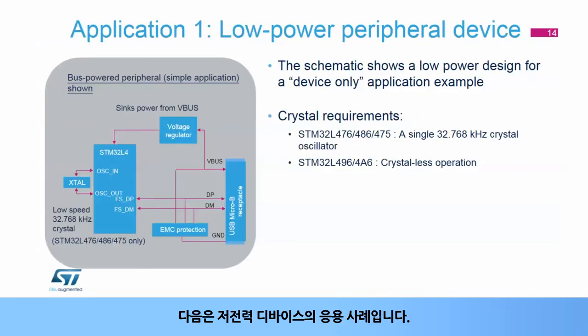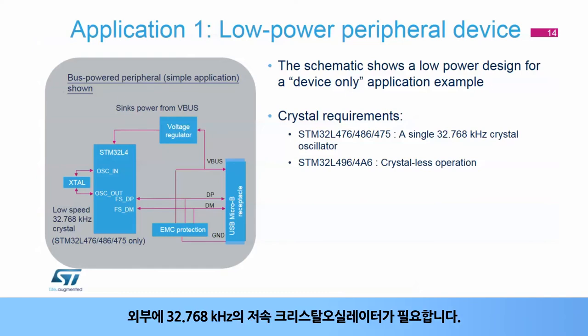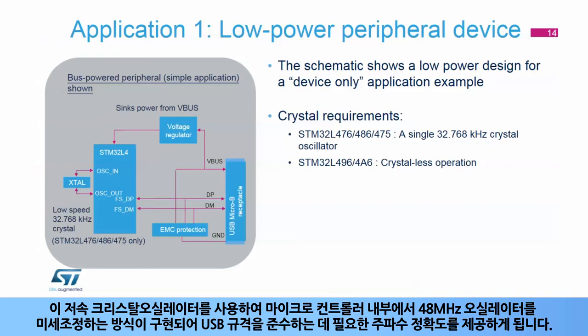Here is an application example of a low-power device. Power is drawn directly from the USB V-Bus signal. A single low-speed crystal oscillator at 32.768 kHz is needed outside. A scheme is implemented inside the microcontroller using this low-speed crystal oscillator to trim the internal 48 MHz oscillator, thus giving the required frequency accuracy to comply with the USB specification.